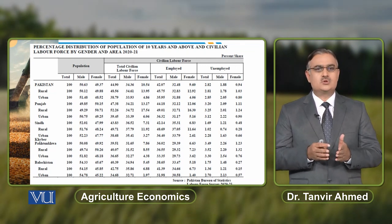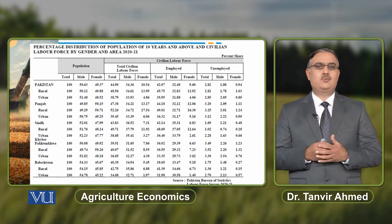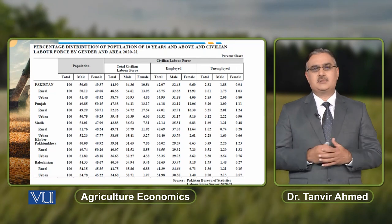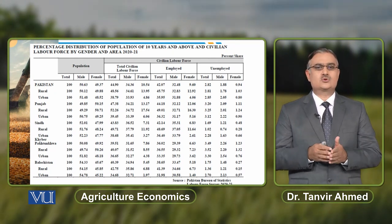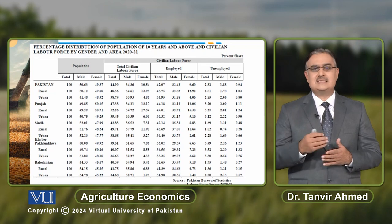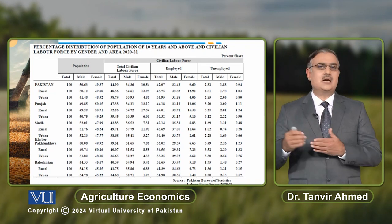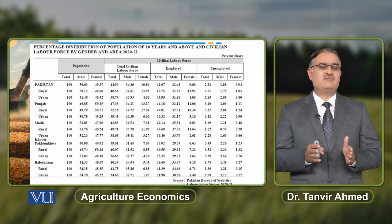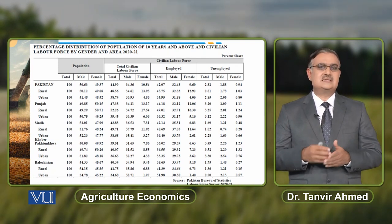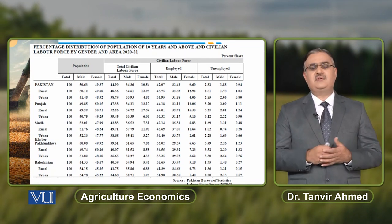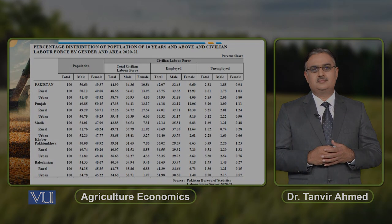In rural areas, you have almost 13.95% of your labor force that is female and employed, and the total female population is 49.88%. When you look at the unemployment statistics, female unemployment in rural areas is less than female unemployment in urban areas. The main reason is that in rural areas, females are involved in agricultural production activities and farming activities to produce agricultural output.